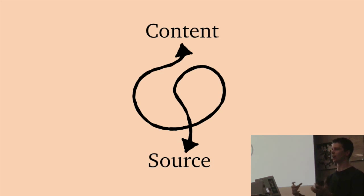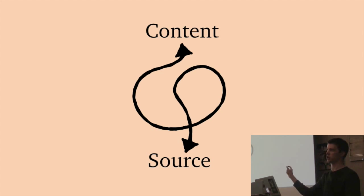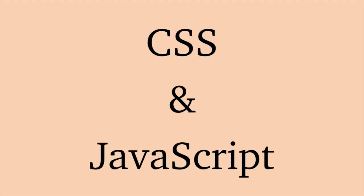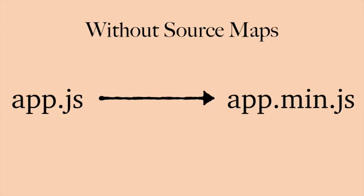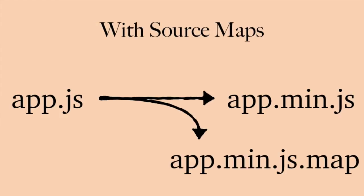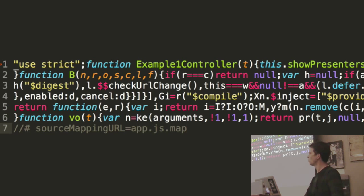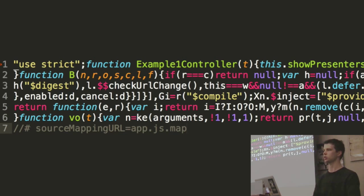So what is a source map? At the highest level it's just a bidirectional mapping between a generated set of content and the source that created it. It lets you map a token in the source map to a token in the compiled output. It works for both CSS and JavaScript. The transformation pipeline with source maps goes from app.js to app.min.js, but it also produces a .map file — app.min.js.map. In the .min.js file you get a new line at the bottom that says sourceMappingURL, specifying the HTTP path to the source map file.